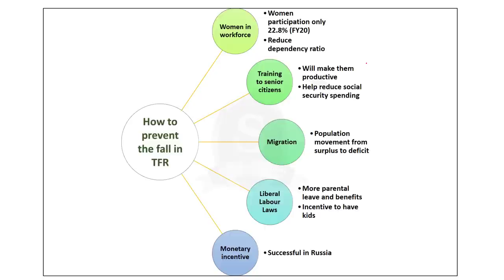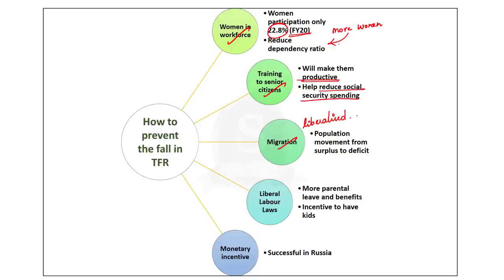The first measure is encouraging more women to join the workforce. As of 2020, female labor force participation in India was 22.8%. If more women are encouraged to join the workforce, the increase in dependency ratio can be addressed. The second measure is providing training to people above 65 to increase their productivity, which will help senior citizens become productive members of society and reduce social security spending. The third measure is liberalizing migration — after 2050, sub-Saharan Africa will be the major contributor to global population, and when migration is liberalized, people will move from population-surplus areas to population-deficit areas.